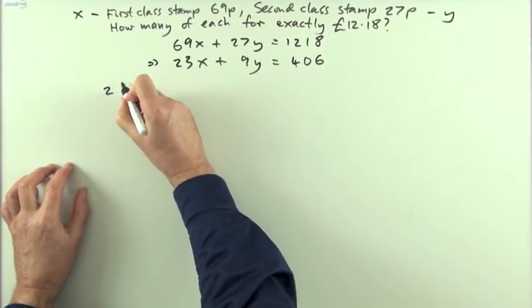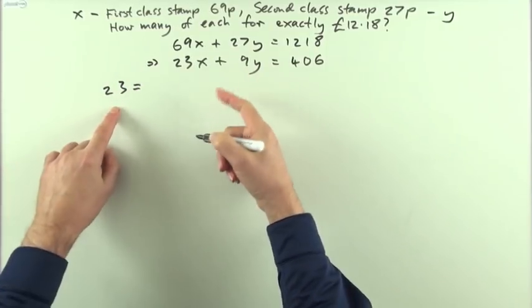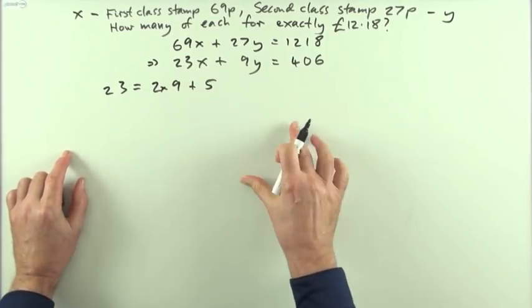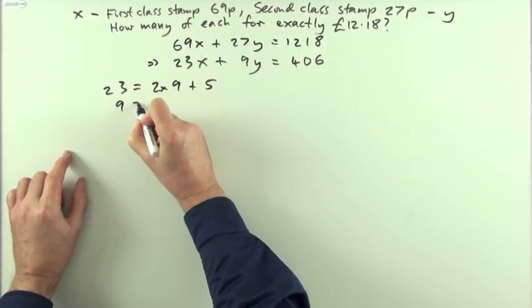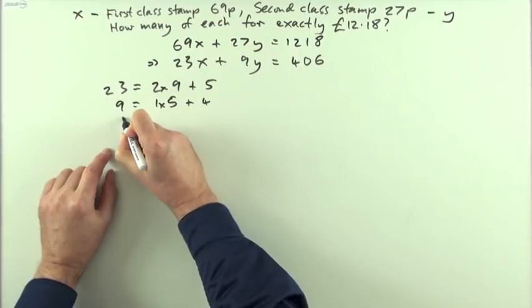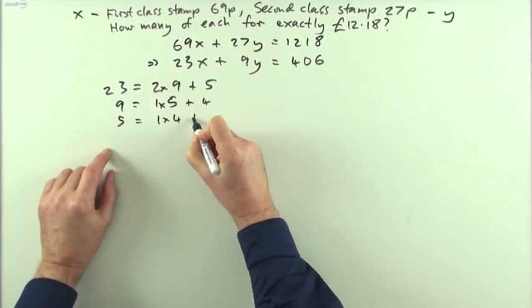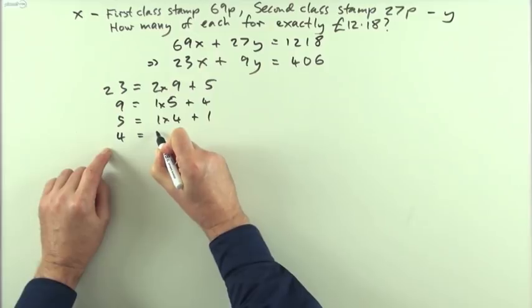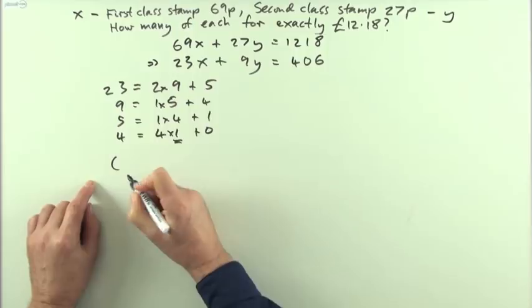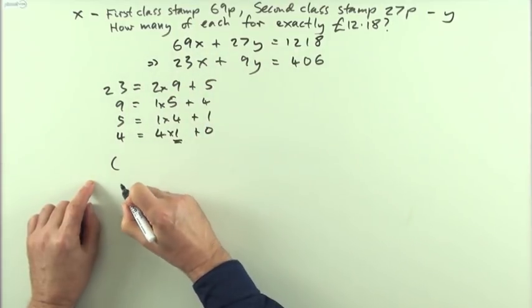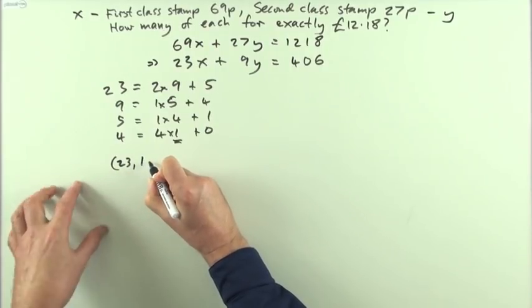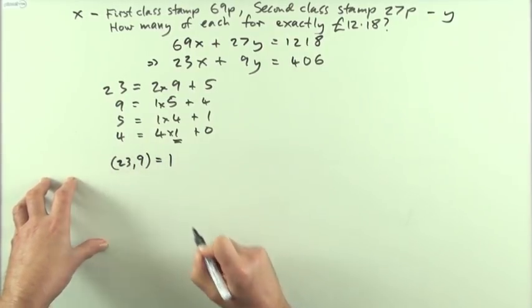So what I would do then is say, right, what about 23? 23 is going to be 2 times 9, that's the 18 plus the 5. Same numbers are appearing here. Start again with the 9 and the 5. 9 is going to be 1 times 5 plus the 4. And 5 is going to be 1 times 4 plus 1. And finally, 4 is going to be 4 times 1 plus 0, making 1 the greatest common divisor, because I've already taken out any common factor that they had, obviously. So 23, the greatest common divisor of 23 and 9 is 1.